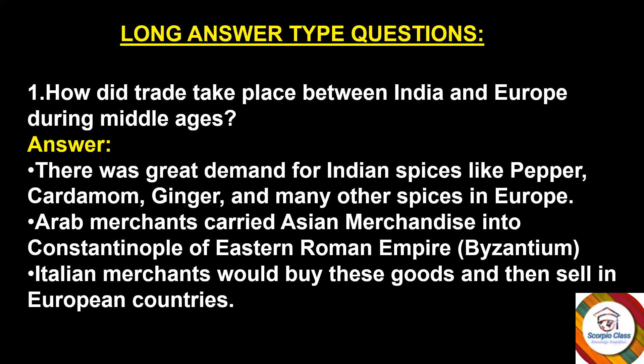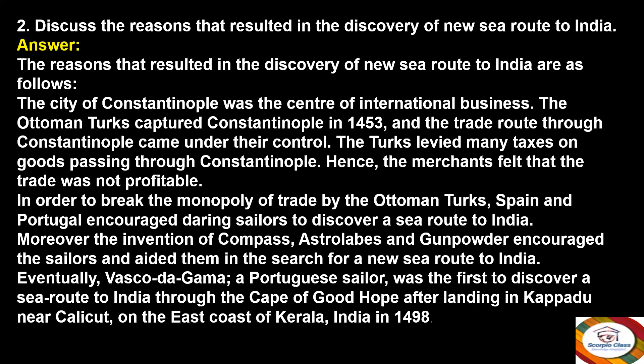Question 2: Discuss the reasons that resulted in the discovery of a new sea road to India. Answer: The city of Constantinople was the center of international business. The Ottoman Turks captured Constantinople in 1453, and the trade route came under their control. The Turks levied heavy taxes on goods passing through Constantinople, making trade unprofitable. To break the monopoly of the Ottoman Turks, Spain and Portugal encouraged daring sailors to discover a sea road to India.